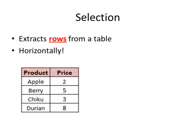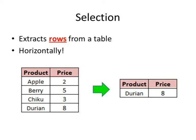The next operator is the selection operator. This is a very common operation used in databases nowadays. It extracts the rows from a table. When we perform a selection operator on the same table shown on the screen, the selection operator is basically a horizontal operation.